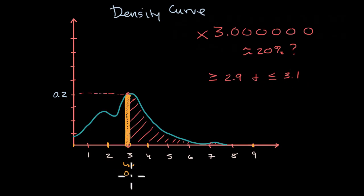And so we could approximate this area by approximating this rectangle, the area of the rectangle. 0.2 times 0.2, that would give us an area of 0.04. Or we could say approximately 4% of the data falls in this interval.